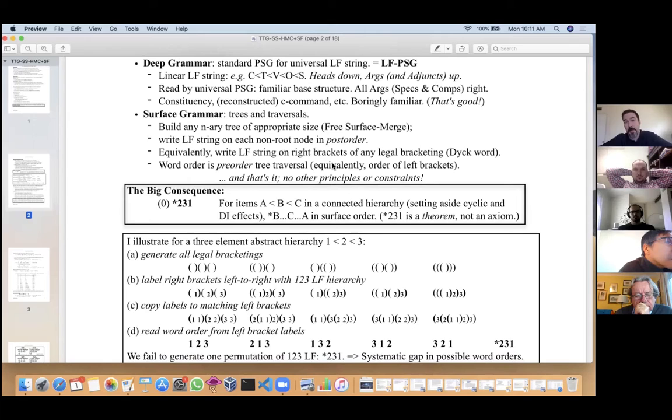The first big one is *231. There's a forbidden permutation of elements from the underlying hierarchy. Given elements A-B-C in a connected hierarchy, I'm setting aside here cycles which might sort of bottle up portions to make them opaque to the rest of the structure, as well as discourse information effects. For any three items A-B-C, any word order of those is permitted on the surface except B-C-A—middle-last-first. This is a theorem, not an accident. This follows from the way that we get the surface orders from the underlying LF string.